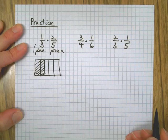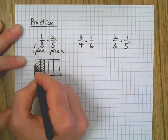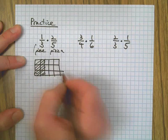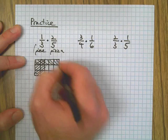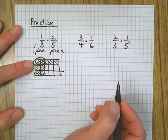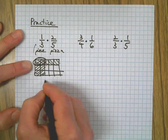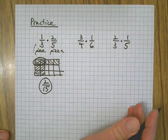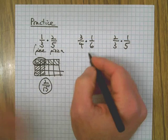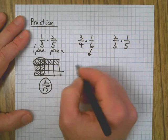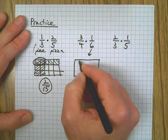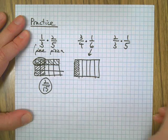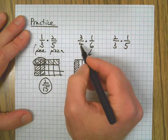There's two, that's two-fifths. Then we're going to take one-third of that: one, two, three. So we're going to color in one out of three. I just circled the part that got colored twice. There's two of them. Total number of pieces: 15. Two-fifteenths is what one-third of two-fifths is.